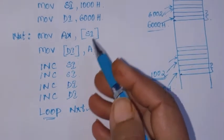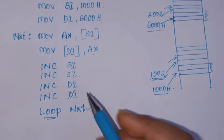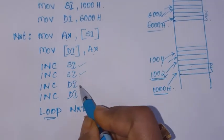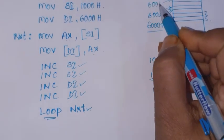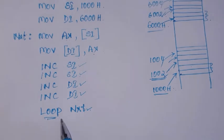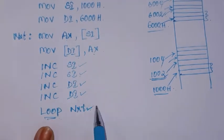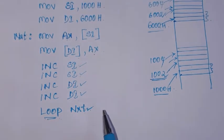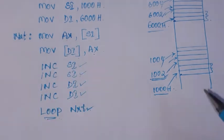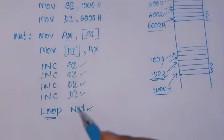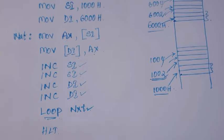With the next instruction, contents of AX are moved to 6002H and 6003H, so the second word is moved from source to destination. Then SI is incremented twice to point to 1004H, and DI is incremented twice to point to 6004H. The LOOP instruction again decrements CX by one; if not zero, execution returns to the label. These statements repeat 0C times until CX becomes zero, by which time all 0C words are transferred.